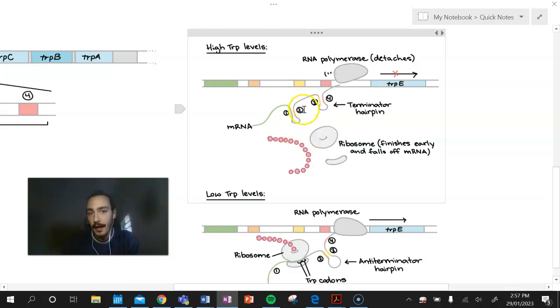So essentially what happens is if we have a high TRP environment, we remember that the leader section, so where this one is, has coded for some tryptophan. Now if there's tryptophan in the environment, you can imagine there's high levels of TRP in the environment, it doesn't need to wait long. The tRNA brings the tryptophan over immediately. Now that, while it sounds a bit weird, is actually a bad thing if we want to create tryptophan because what happens in this attenuation sequence is that these hairpin loops form.